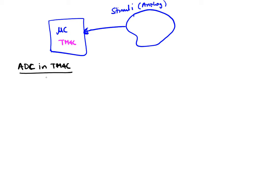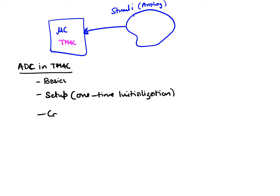First, we'll get some basics about it, look at the details and some of the features of it. Then we'll look at the setup — the one-time initialization. And then we'll look at the capture: how to capture a single sample. That is, if I want to read an analog value, what programming steps do I perform in order to capture a single sample?